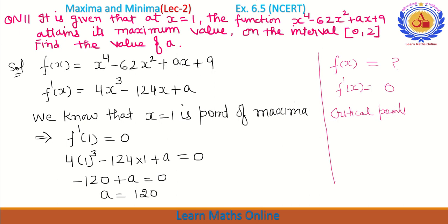Then by using the second derivative test: if f''(x) is less than zero at x = c1, then c1 is called a point of maxima. If f''(x) is greater than zero at x = c2, where c1 and c2 are calculated by equating f'(x) = 0, then c2 is called a point of minima.